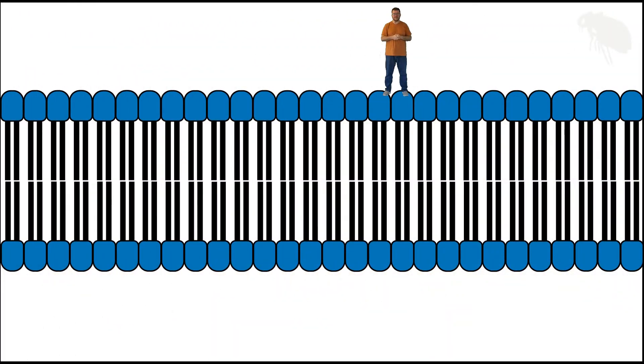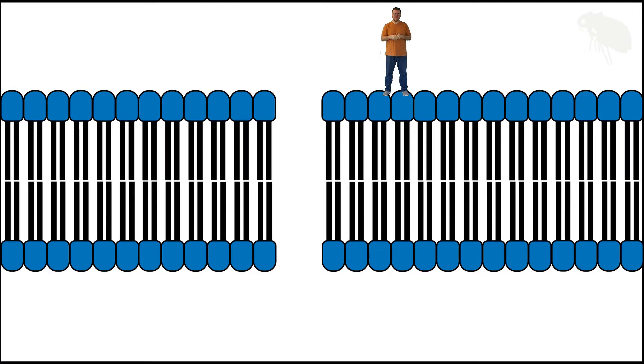In my membrane permeability video, I talked about this idea of there being holes in the phospholipid bilayer to allow substances that are hydrophilic or ionic to pass through the membrane. They're not actually going to be holes. They're going to be integral membrane proteins.